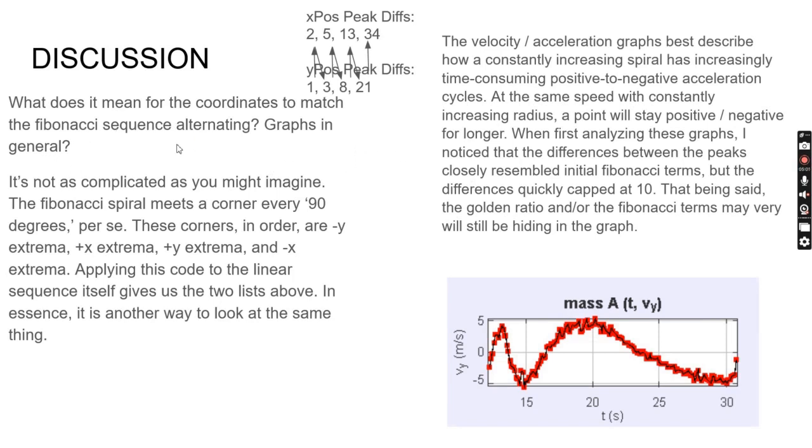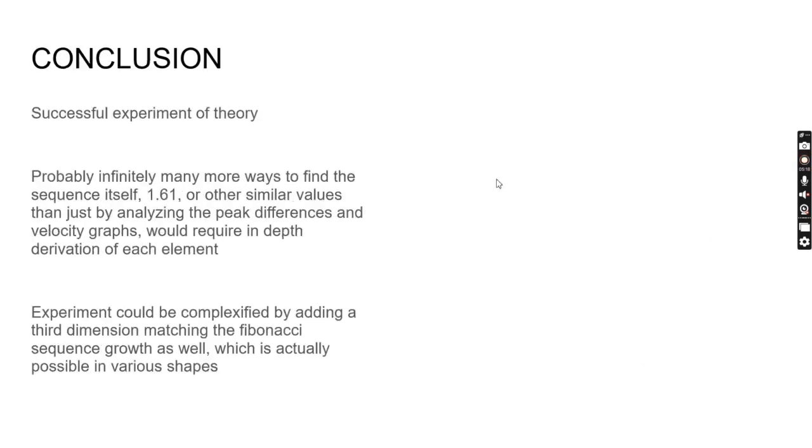The velocity and acceleration goes more drawn out over time because you're taking much longer to complete a spiral. Conclusion: successful. There are lots of ways to find these golden values.